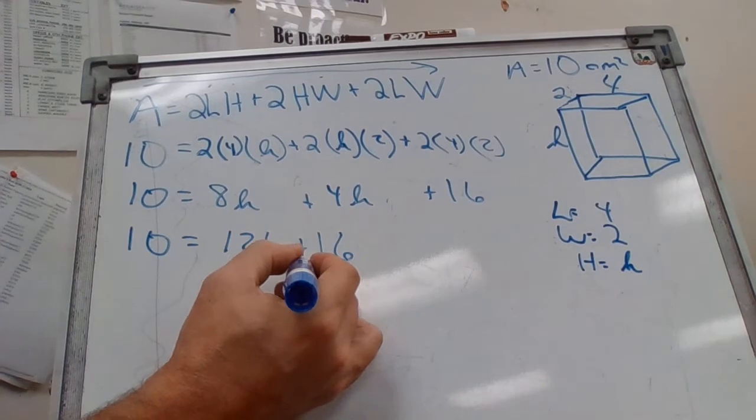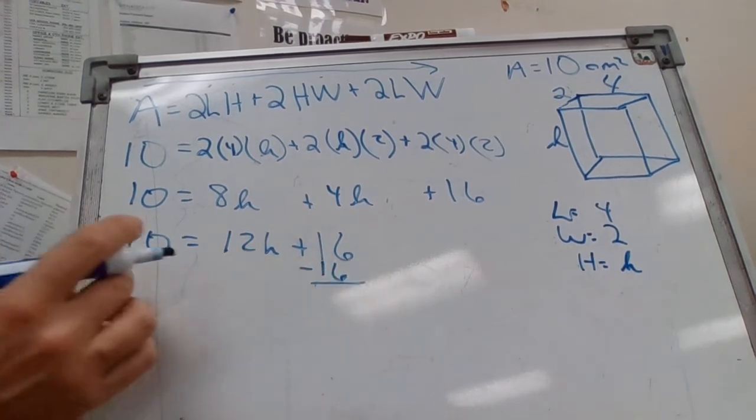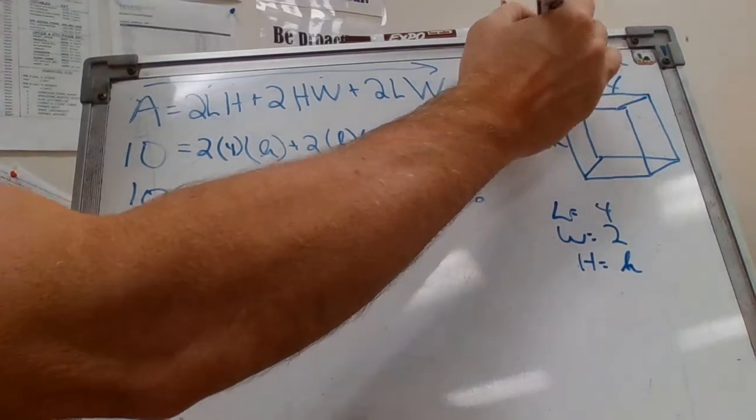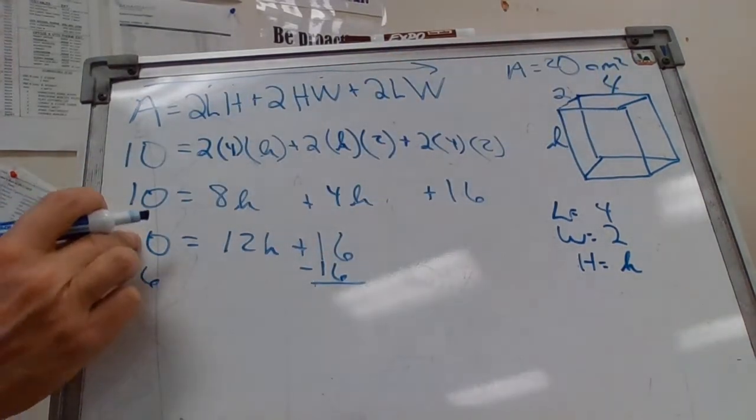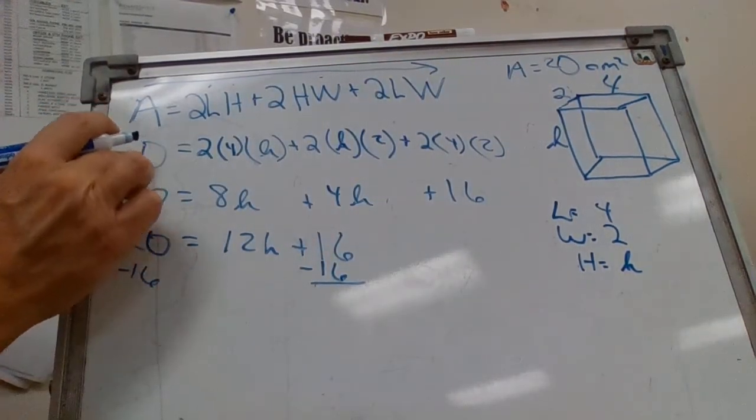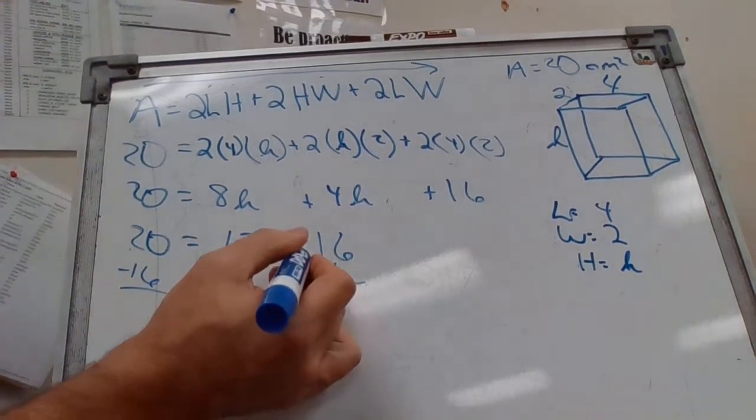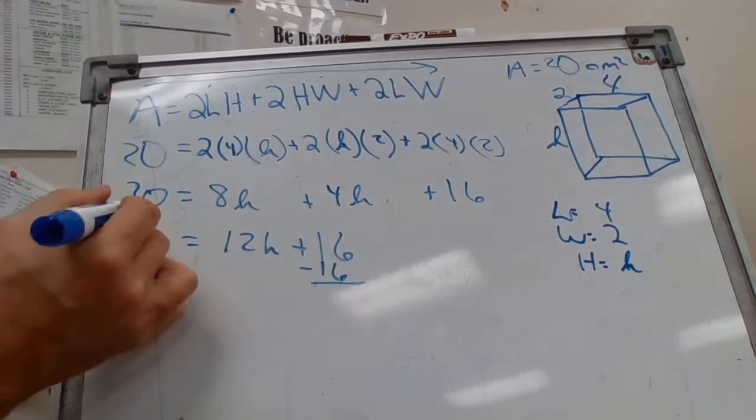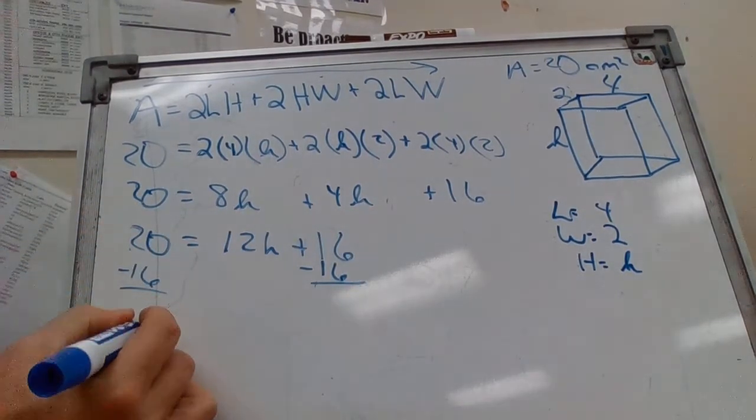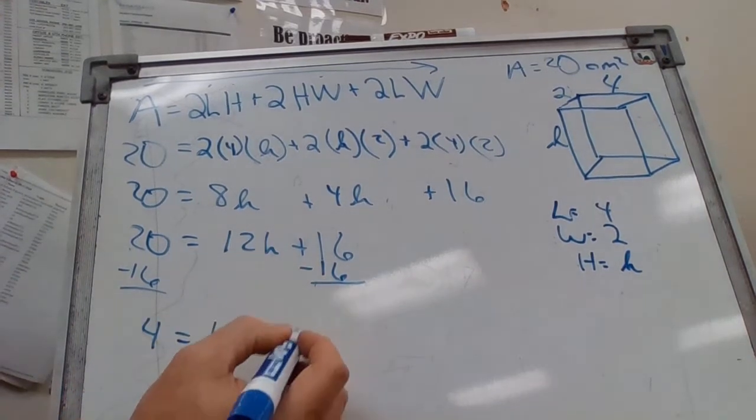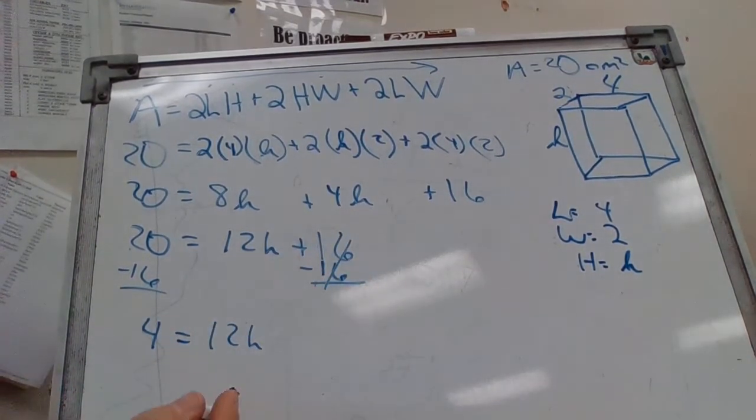This is not going to work out necessarily right. So what we're going to do is go ahead and change this area to 20 because we don't have a negative. So let's go ahead and change that area to 20 so we can have something to take away from this. Left to right again, 20 minus 16 is 4 equals 12H, those cancel.